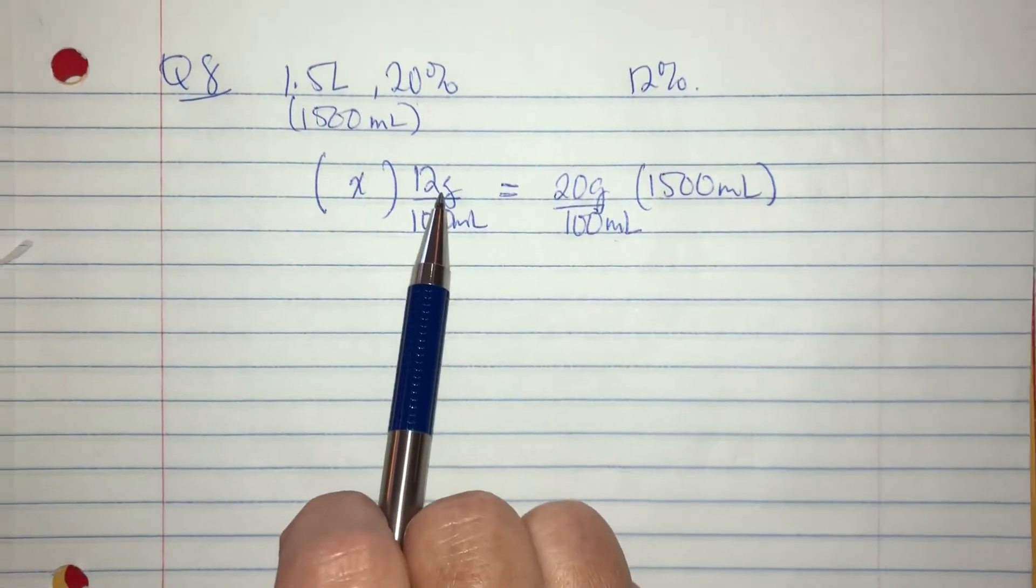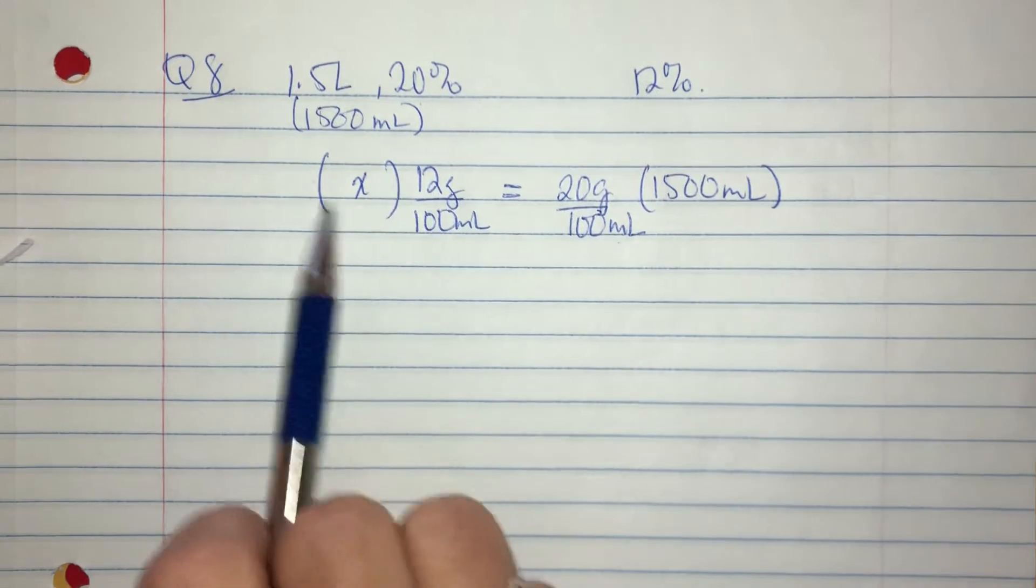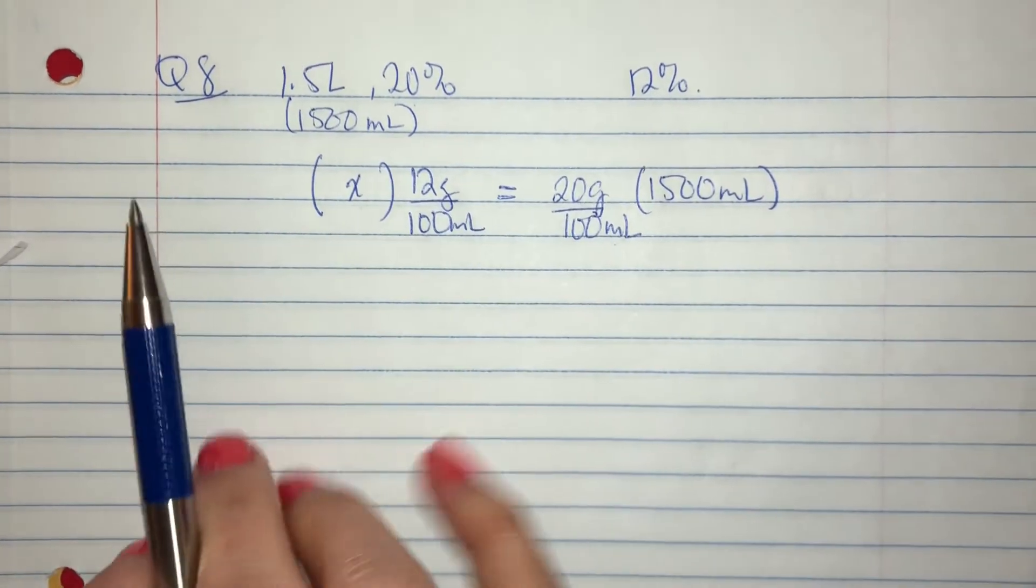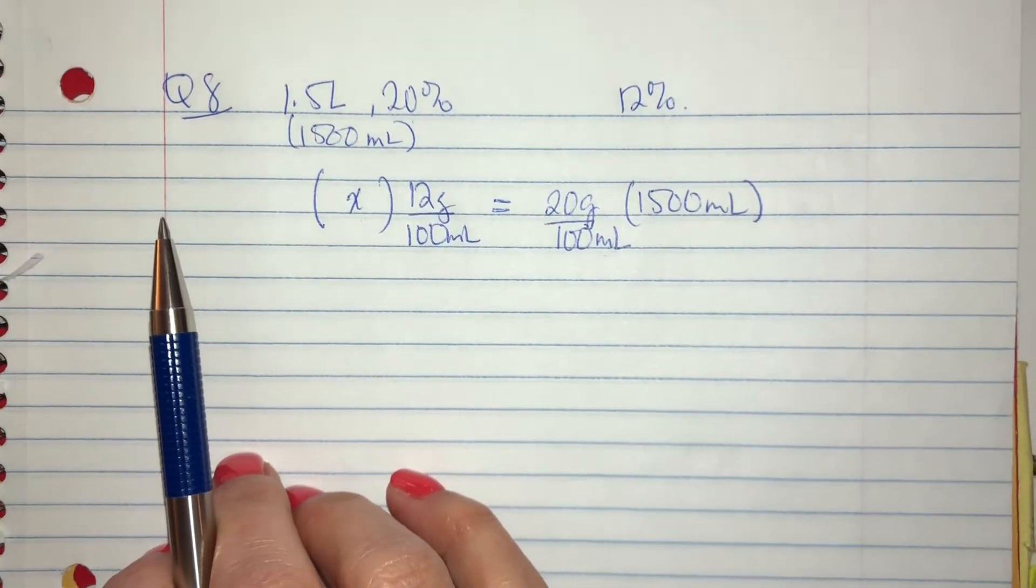This is what I want. I want a concentration that's 12 grams over 100 mils but I don't know how much liquid I'm going to end up with in the end. So let's start with that. It's figuring out how much liquid I'm going to have in the end.